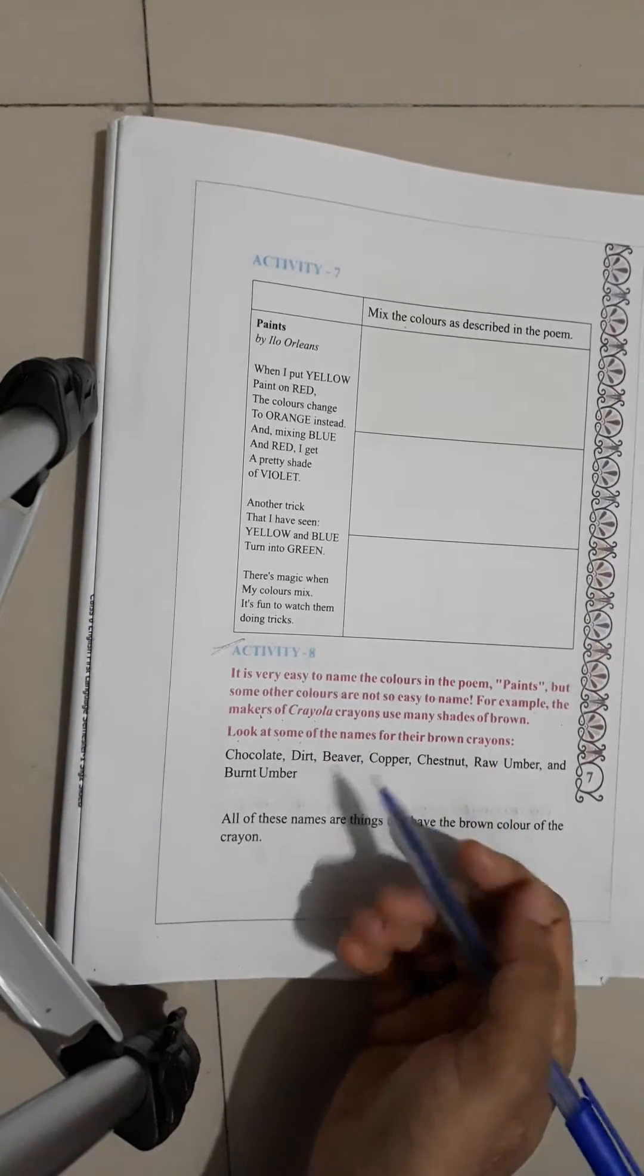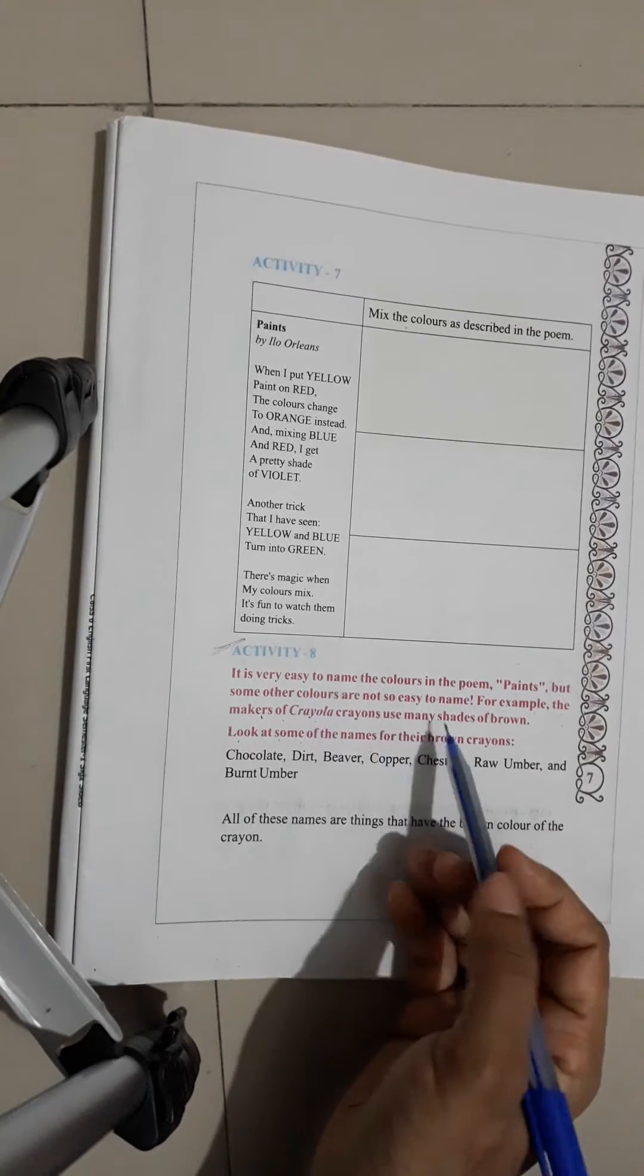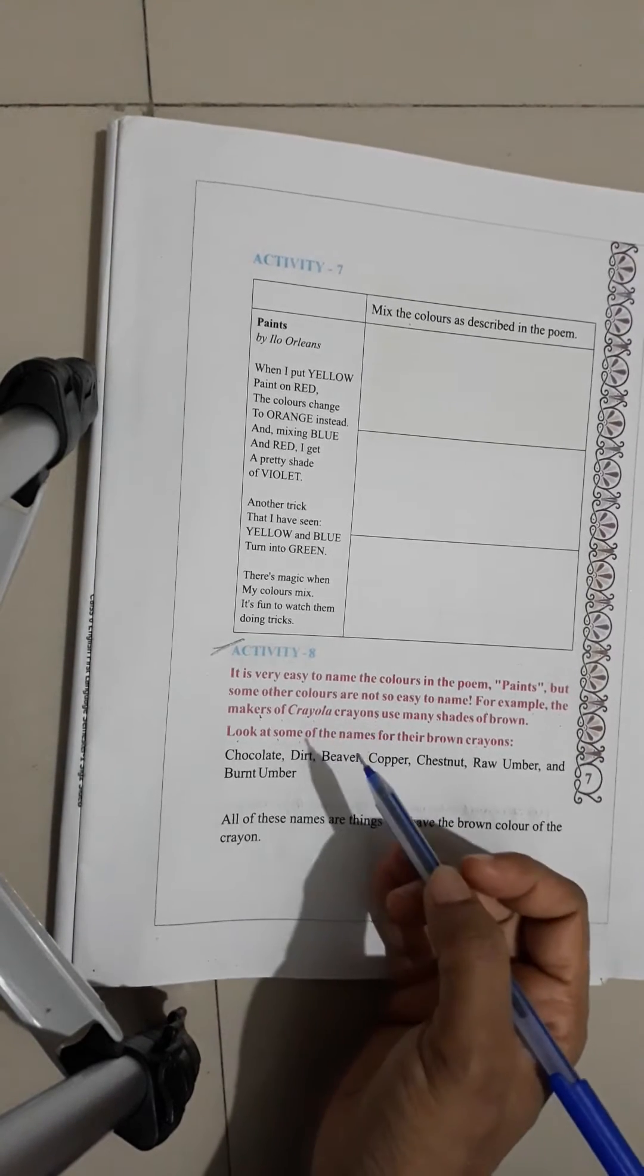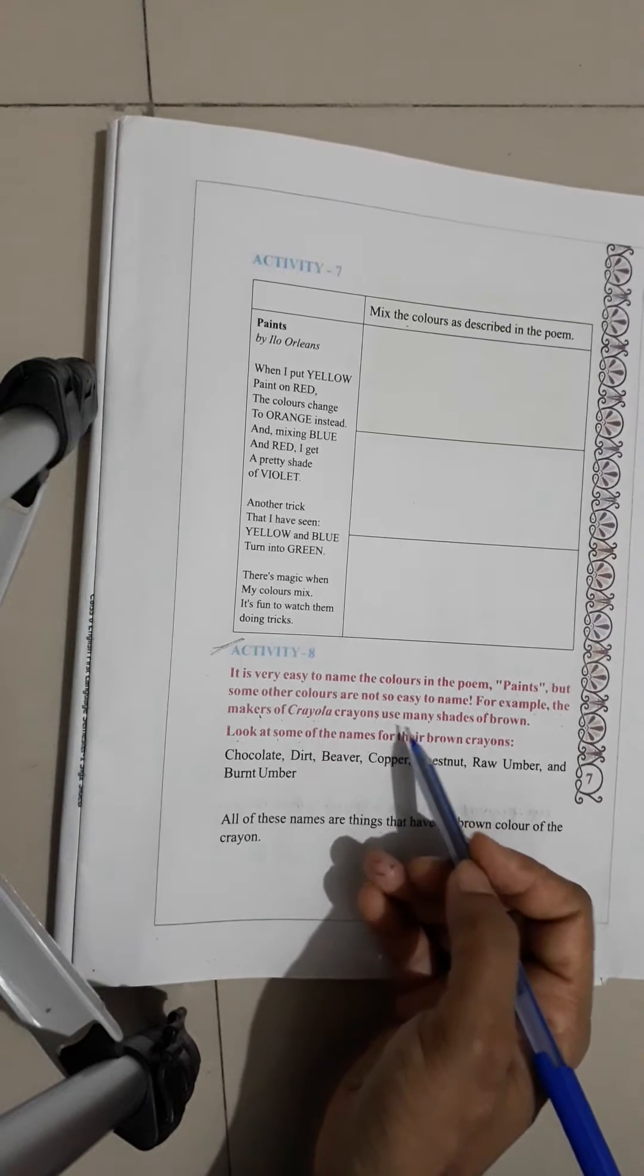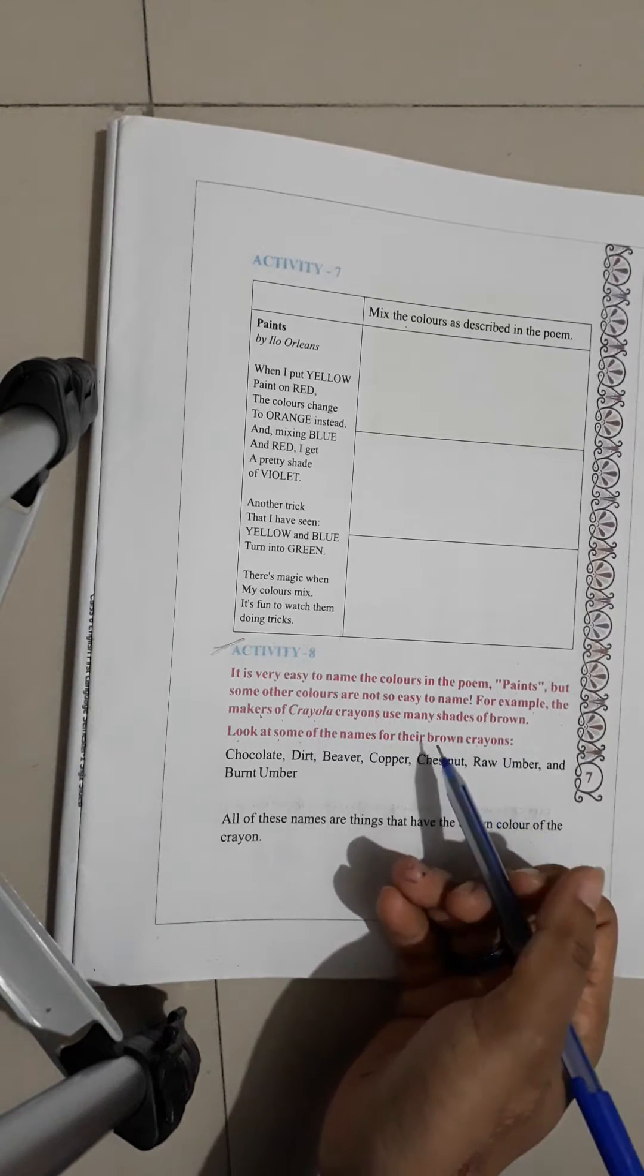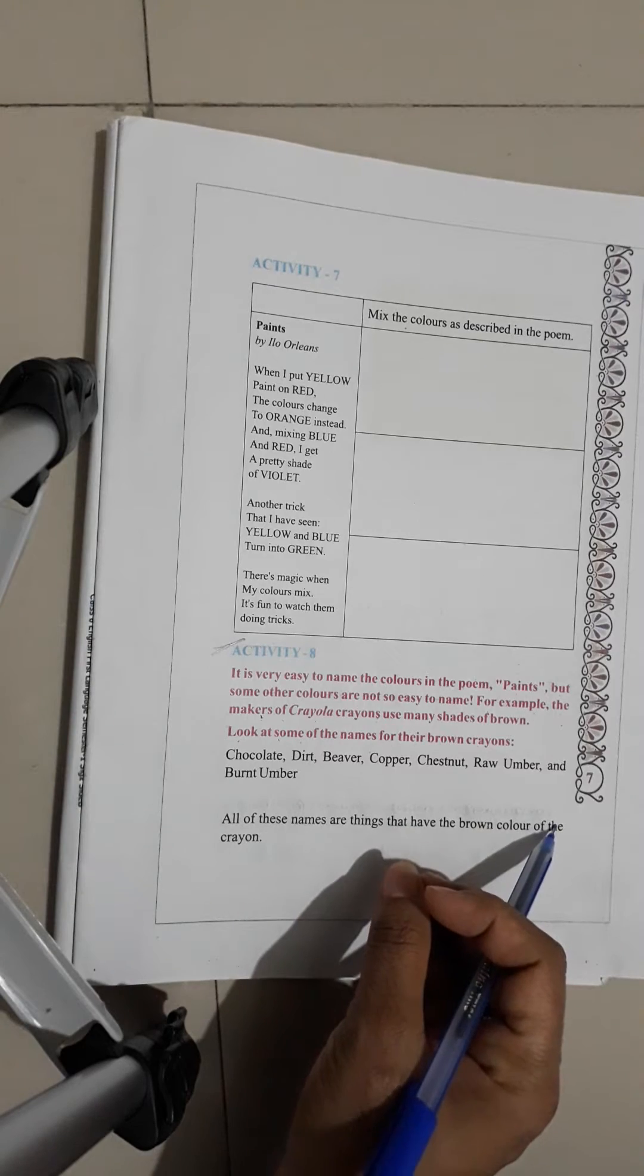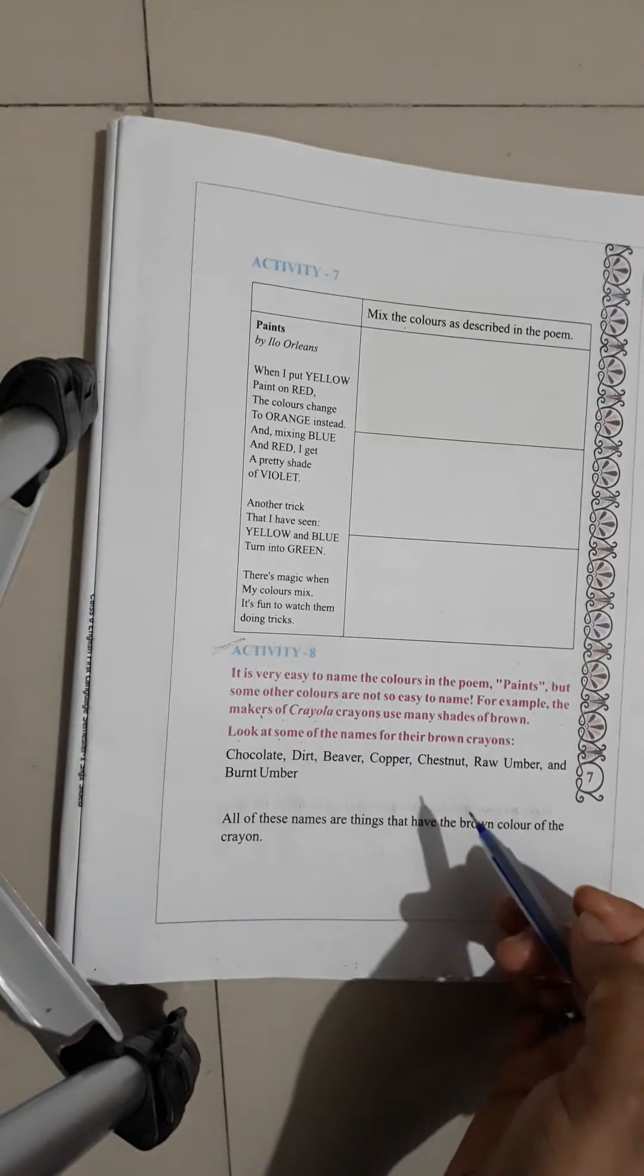It is a color, like any color, it is easy to name. But a maker of Crayola crayons, it is a pen to use many shades of brown. Brown color is also made, but it also has a lot of shades. Like light brown, dark brown, medium brown, shaded brown.